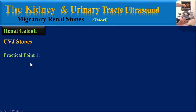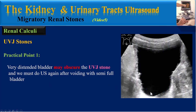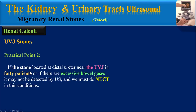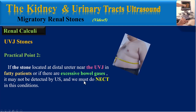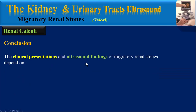We must keep in mind a few practical points about UVJ stones. First, a very distended bladder may obscure the UVJ stone, so we must repeat the ultrasound after voiding with a semi-full bladder. Second, if the stone is located at the distal ureter near the UVJ in fatty patients, or if there are excessive bowel gases, it may not be detected by ultrasound and we must perform non-enhanced CT in these conditions.